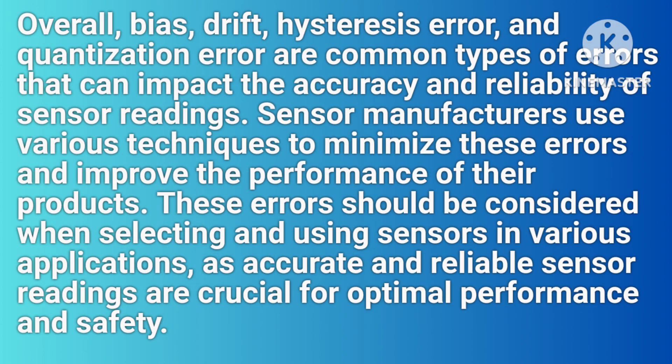Overall, bias, drift, hysteresis error, and quantization error are common types of errors that can impact the accuracy and reliability of sensor readings. Sensor manufacturers use various techniques to minimize these errors and improve the performance of their products. These errors should be considered when selecting and using sensors in various applications, as accurate and reliable sensor readings are crucial for optimal performance and safety.